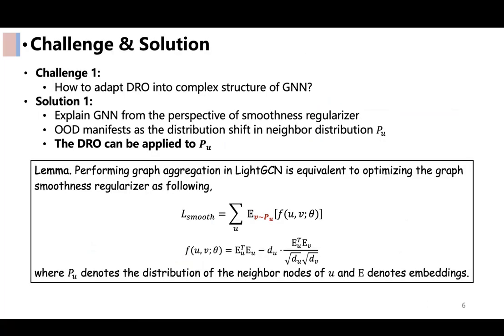However, incorporating DRO into graph-based recommender systems poses two challenges. First, the application of DRO to complex graph-structured data is difficult. To address this, we consider interpreting LightGCN from the perspective of a smoothness regularizer. This leads us to the realization that the impact of OOD on graph models is manifested in the shift of neighbor node distributions. Therefore, we consider optimizing the smoothness regularizer using a DRO based on the KL divergence.